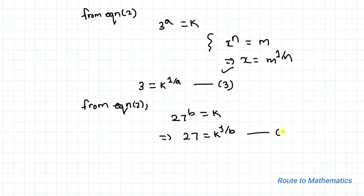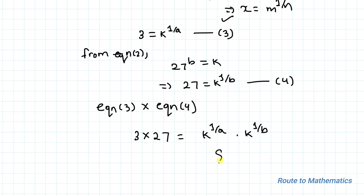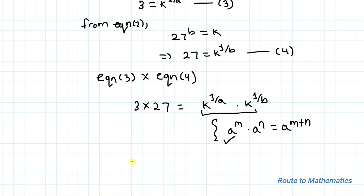Now multiplying equation 3 and equation 4, we can write 3 multiplied with 27 equals k to the power 1/a multiplied with k to the power 1/b. We know the exponential law that a to the power m multiplied with a to the power n equals a to the power m+n. So by applying this exponential law, as the bases are the same, we can write 81 equals k to the power 1/a + 1/b.